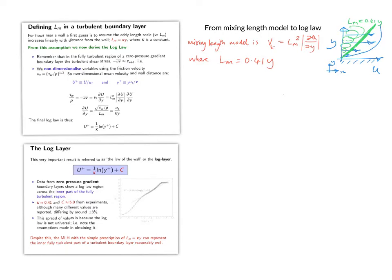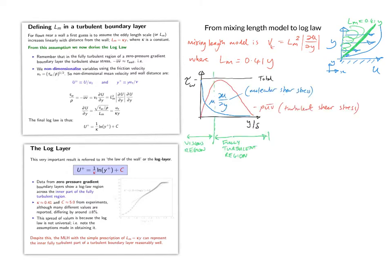So then starting off from the mixing length model, and recalling that the turbulent shear stress in the fully turbulent region is equal to the wall shear stress. So this is the variation of the turbulent shear stress in red and the molecular shear stress in blue away from the wall.